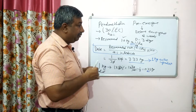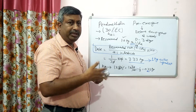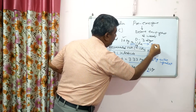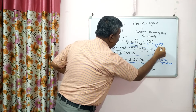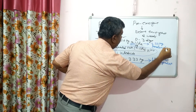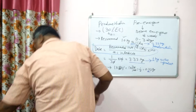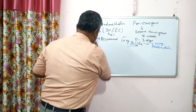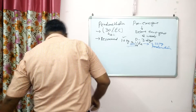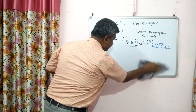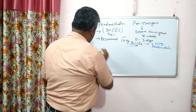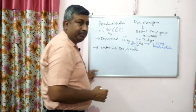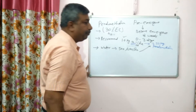So 3.33 liters is the dose of pendimethalin per hectare. Now, the recommended volume of water for spraying pendimethalin is 500 liters per hectare. So in 500 liters of water, we have to mix 3.33 liters of pendimethalin. This is important — the water amount matters for calculating field quantities.